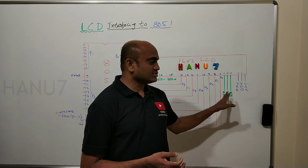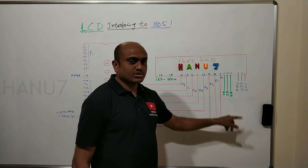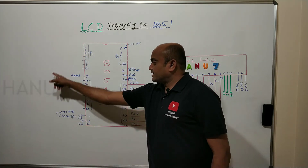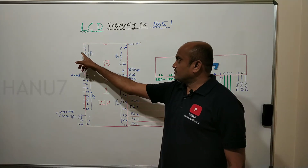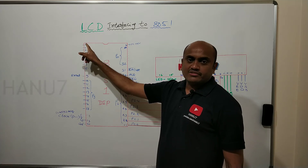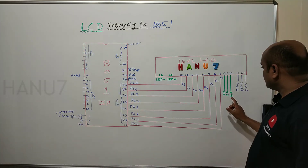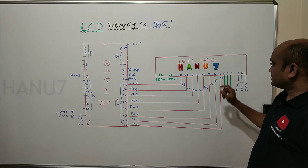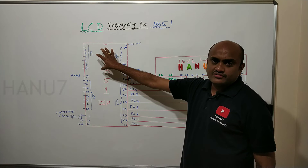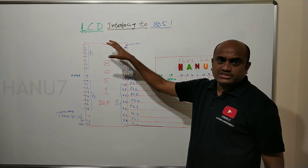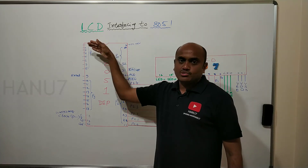In this interfacing I am using port 1 for the control pins. I am using P1.0, P1.1, and P1.2 — those three pins are connected to pins 4, 5, and 6 of the LCD, which are RS, Read/Write, and Enable respectively. So the microcontroller controls RS, Read/Write, and Enable through port 1.